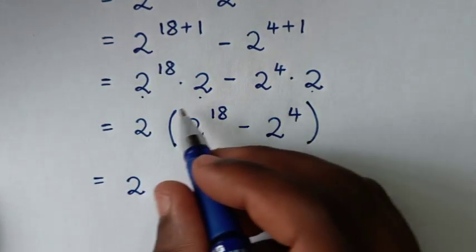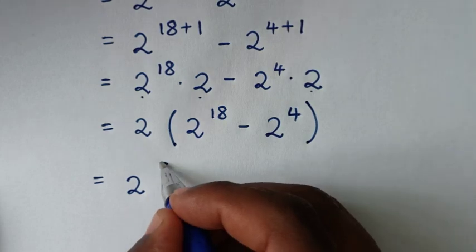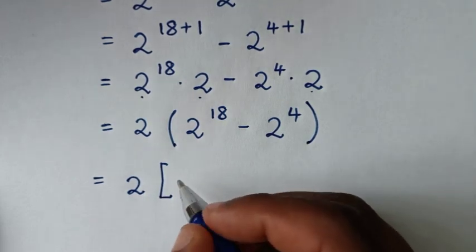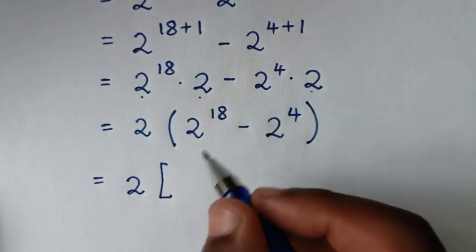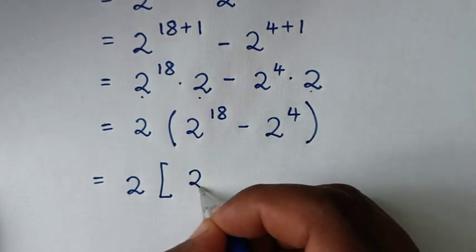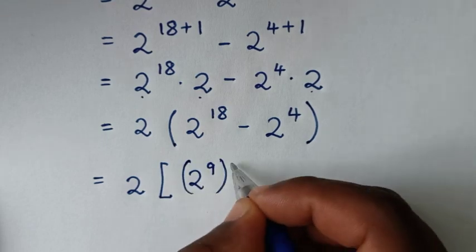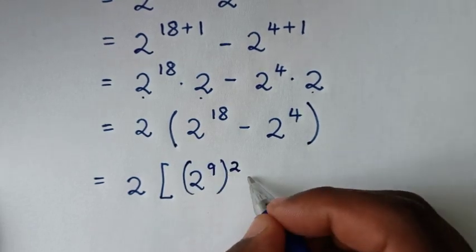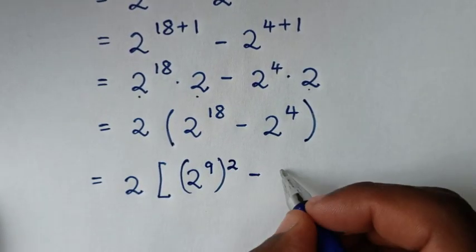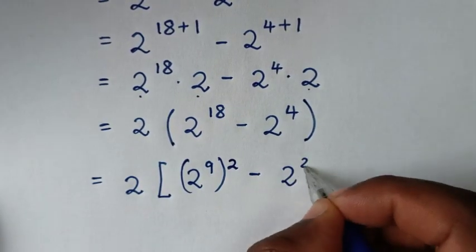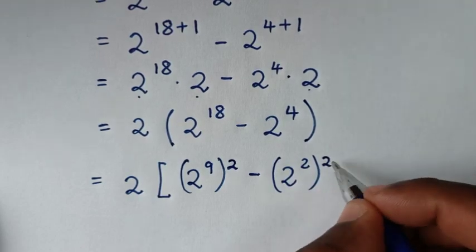From here inside the bracket we will make it in the form of a perfect square. So it will be bracket, then 2 power of 18 into square is 2 power of 9, then bracket squared, minus 2 power of 1 to square is 2 power of 2, then bracket squared.